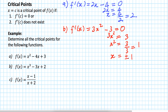If you substitute 1 into x, you have 1 squared, you get 1. If you substitute minus 1 into x, minus 1 squared also equals 1. Now you have 2 critical points: x equal to 1 and x equal to minus 1.